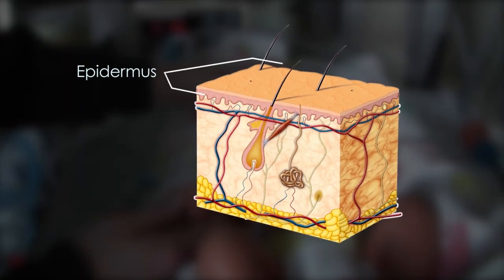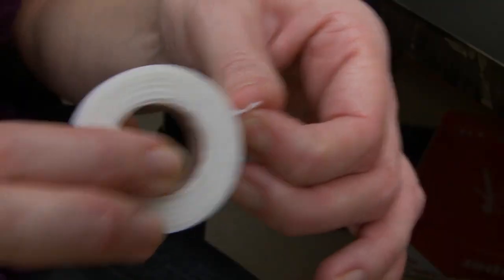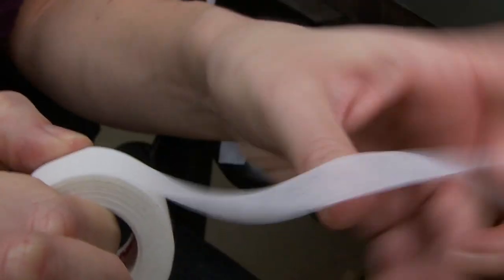Preemie babies lack the tough top layer of skin called the epidermis. Medical tape can rip off the more delicate lower layers of skin.